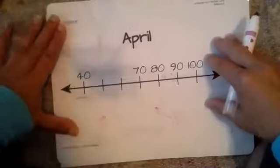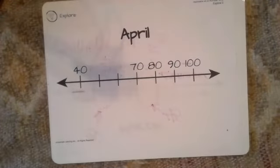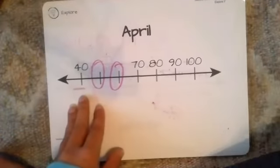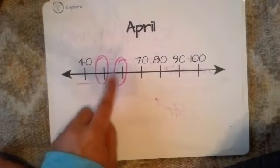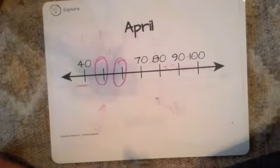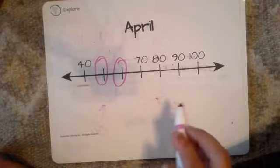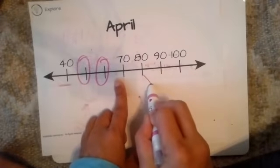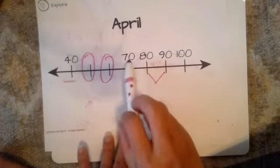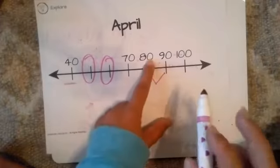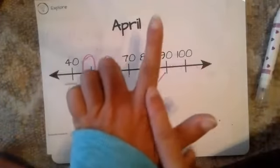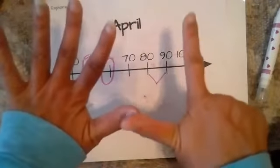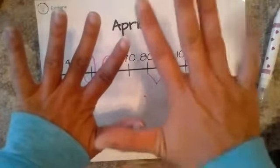We're going to do one more example. We're starting at 40, and we need to circle those missing numbers. I don't have these two, so it's going to be hard to count forward — I might want to count backward to the left. Let's look at the distance between the known numbers: 70, 80, 90, 100. Counting between 80 and 90: 81, 82, 83, 84, 85, 86, 87, 88, 89, 90.